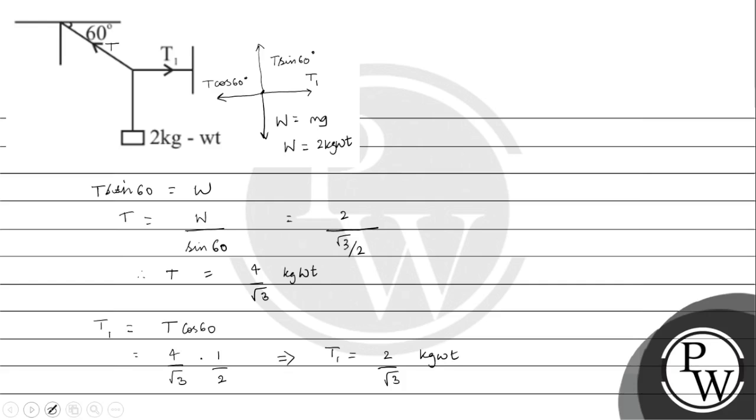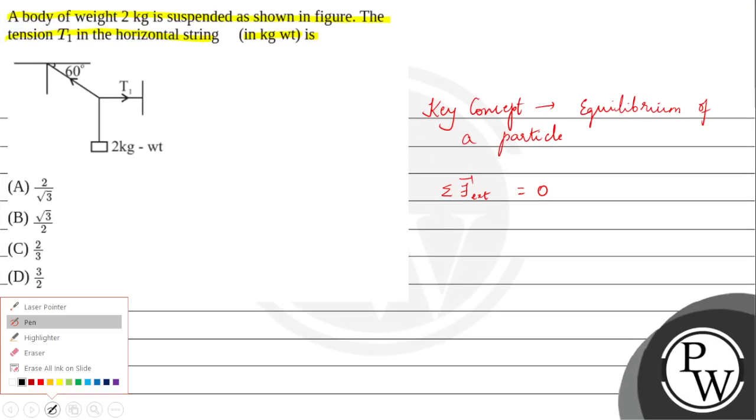Now we can go back to the question and mark the correct answer. The tension T1 in the horizontal string in kg weight is option A, 2 by root 3 kg weight. Hope you have understood it well. Best of luck.